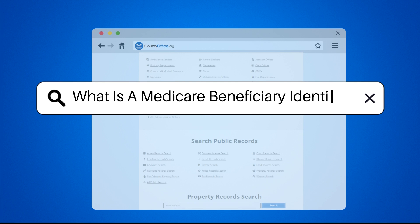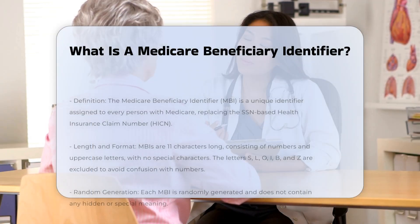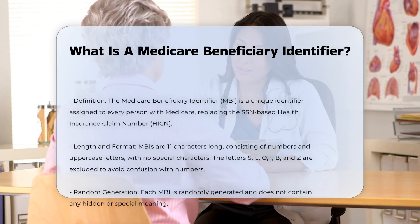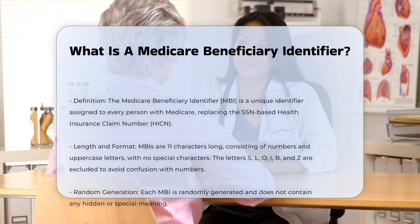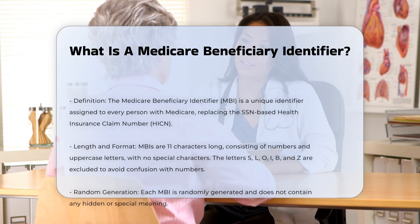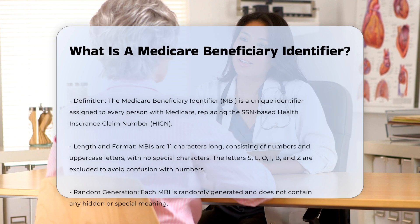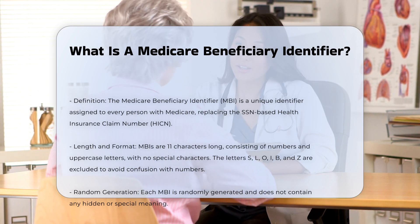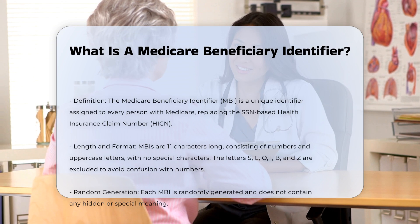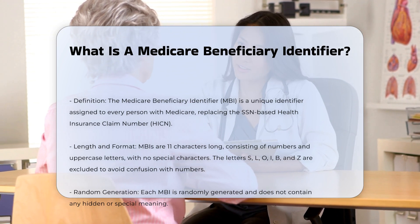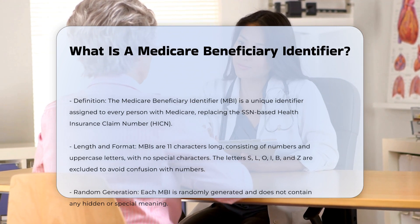What is a Medicare Beneficiary Identifier? The Medicare Beneficiary Identifier, MBI, is a unique identifier assigned to every person with Medicare, replacing the Social Security Number (SSN)-based health insurance claim number, HICN, on Medicare cards. This change was mandated by the Medicare Access and CHIP Reauthorization Act of 2015 to enhance security and protect beneficiary information.